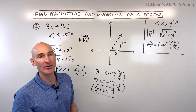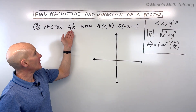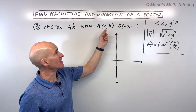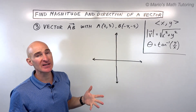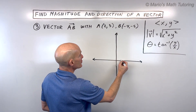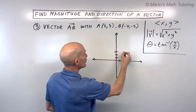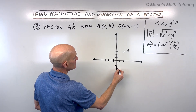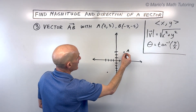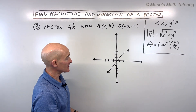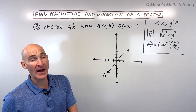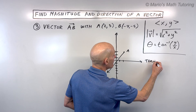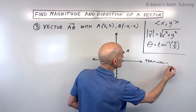For example number three, we've got vector AB — we want to find the magnitude and direction. They give us point A at (2, 3) and point B at (negative 4, negative 5). Let's sketch it: A is our initial point at right 2, up 3, and B is our terminal point at negative 4, negative 5. Our vector goes something like that. To find the vector in component form, we use terminal minus initial, so B minus A: negative 4 minus 2, and negative 5 minus 3.